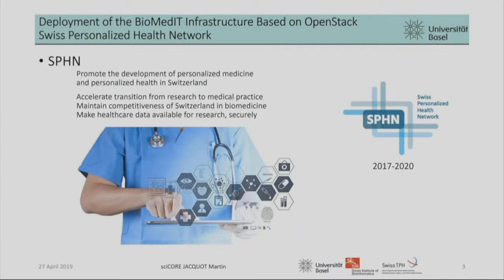So, this part we will try to be very short because it's just to see what we are speaking about. SPHN stands for Swiss Personal Health Network. The goal is to promote the development of personalized medicine and personalized health in Switzerland. We try to accelerate the transition from research to medical practices and maintain the competitiveness of Switzerland in Biomedicine — here we are in Basel, we have a lot of pharma industry, and it's important for Switzerland that we remain competitive in this field.